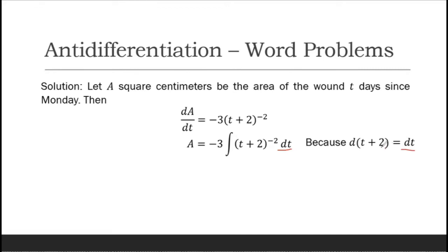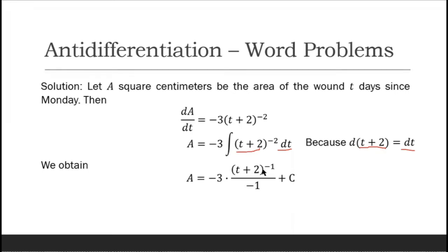Since (t + 2) is present in our integrand, we proceed and obtain A = -3 times the integral of (t + 2)⁻². Applying the power rule, the exponent becomes -2 + 1 = -1, and we get -3 × (t + 2)⁻¹ / (-1). The negatives cancel, giving us A = 3/(t + 2) + c.